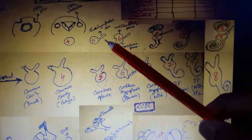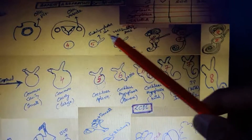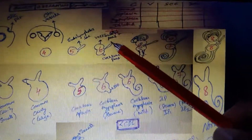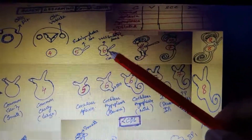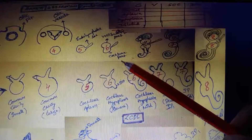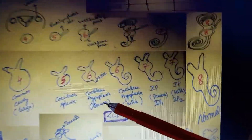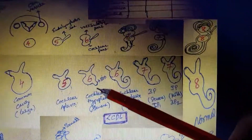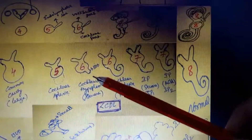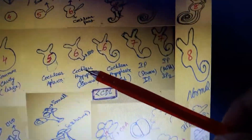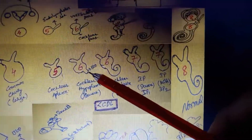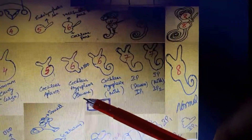If arrest happens at the endolymphatic sac development point — fifth week — that is cochlear aplasia. If arrest happens at the sixth week, the division of the otic vesicle into vestibular part and cochlear part occurs, and that becomes cochlear hypoplasia. The cochlear part develops like a bud — called cochlear hypoplasia severe.